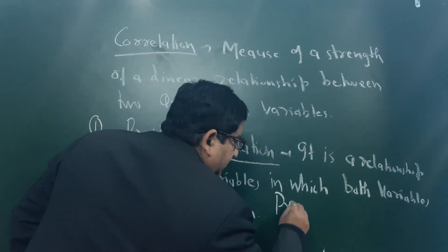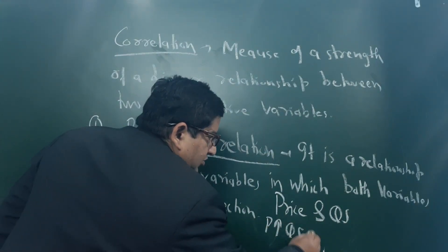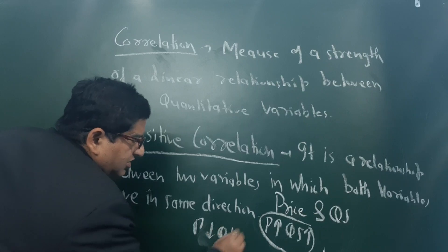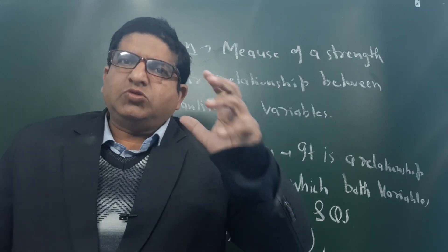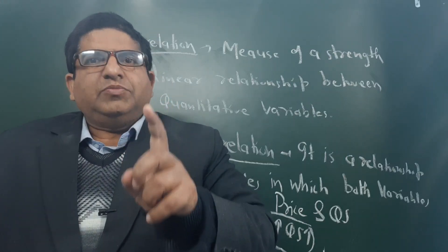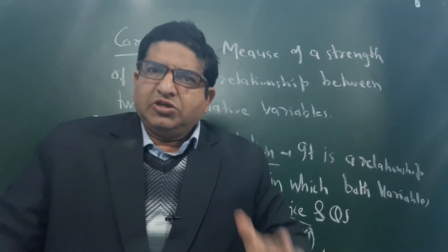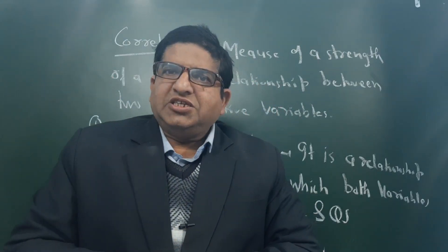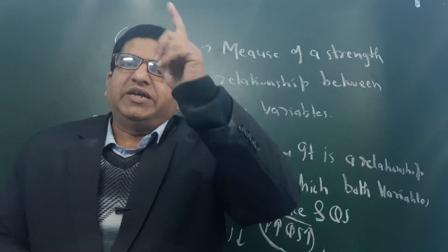For example, price and quantity supplied: the more the price of the commodity, the more the quantity supplied; the less the price of the commodity, the less the quantity supplied. This is positive correlation — both variables move in the same direction. Positive correlation means x and y both move in the same direction: x is bigger, y is bigger.